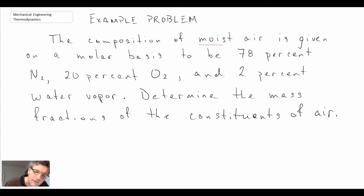So there's our question. We're given a question involving moist air, and so that is our gas mixture. We're told that 78% of air is nitrogen, 20% is oxygen, and the remaining 2% is water vapor.